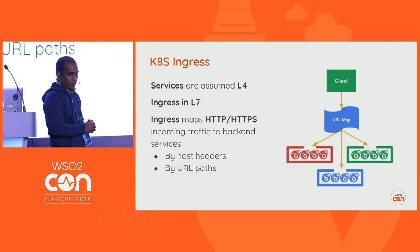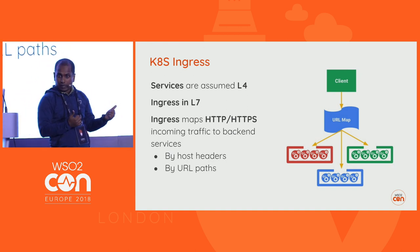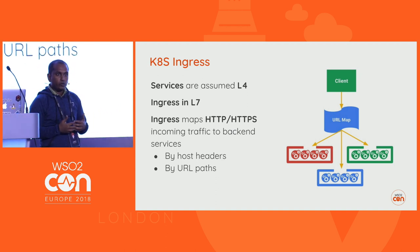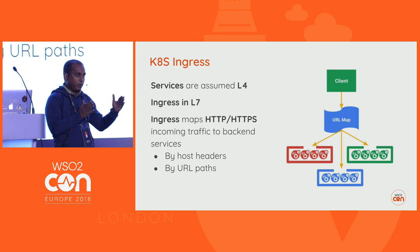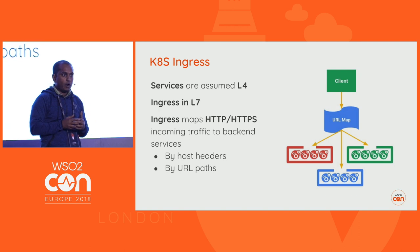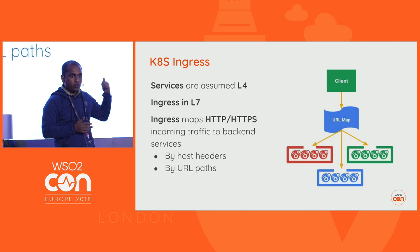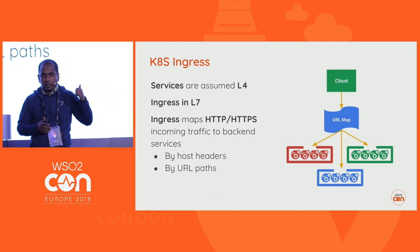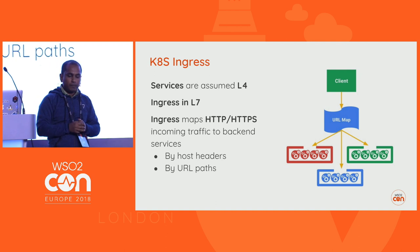Kubernetes Ingress provides Layer 7 routing. If you need HTTP/HTTPS-based routing, header-based routing, or URL-path-based routing, you can use a Kubernetes Ingress controller to map different paths or domain names and route them to your internal cluster services.